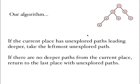So let's look at our algorithm. The algorithm is: if the current place has unexplored paths leading deeper, take the leftmost unexplored path — we are then left with a new subtree. If there are no deeper paths from the current location, return to the last place with unexplored paths and again take the leftmost unexplored path. That's the entire algorithm we followed in order to search the tree.